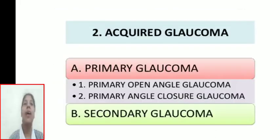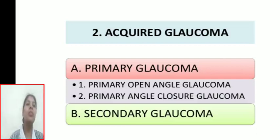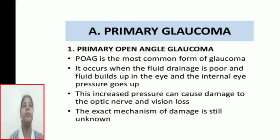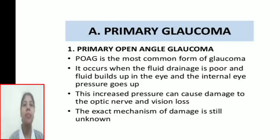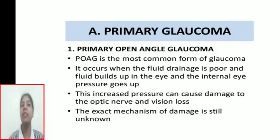Next is acquired glaucoma. Primary glaucoma includes primary open-angle glaucoma, primary angle-closure glaucoma, and secondary glaucoma. Primary glaucoma is the most common form; it occurs when fluid drainage is poor, fluid builds up in the eye, and internal eye pressure rises. This increased pressure can cause damage to the optic nerve and vision loss. The exact mechanism of damage is still unknown.